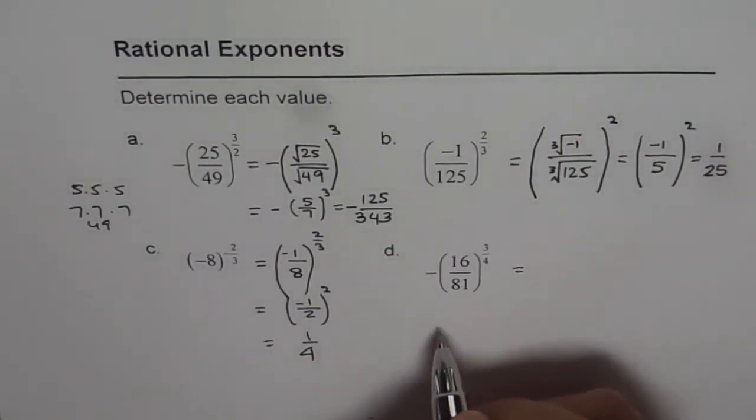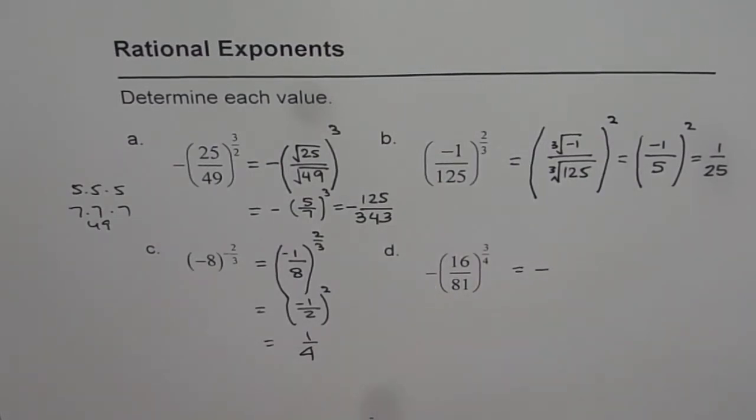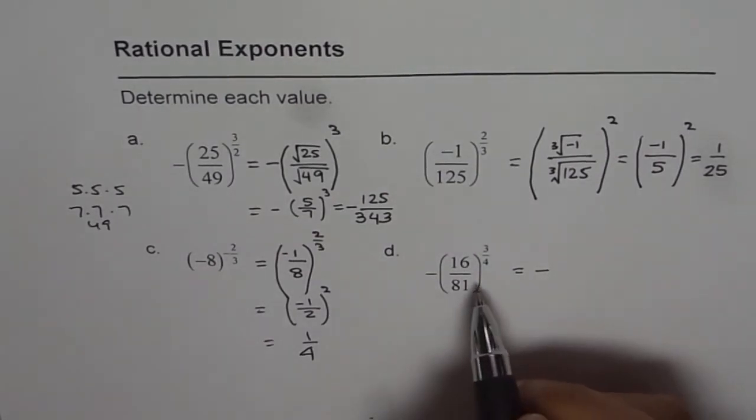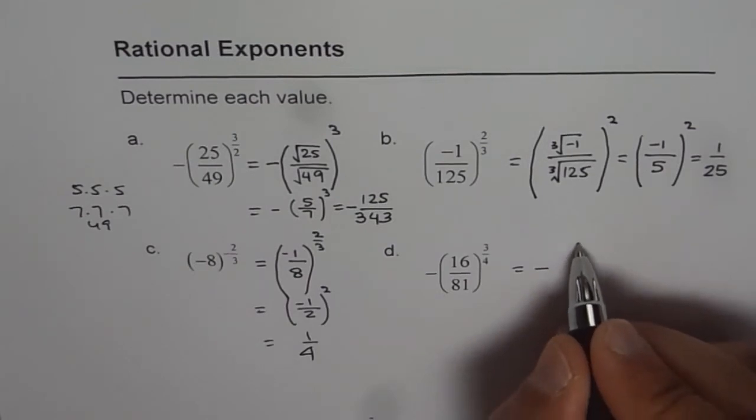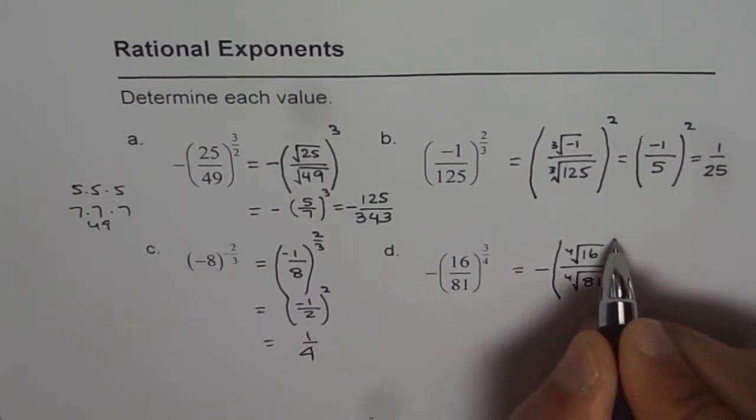Now here, part D is 16 over 81 with negative outside. So we will always get a negative result. This exponent is not for this number. Now let's do the fourth root and then the cube. Let's find the fourth root of 16, fourth root of 81, and then cube the result.